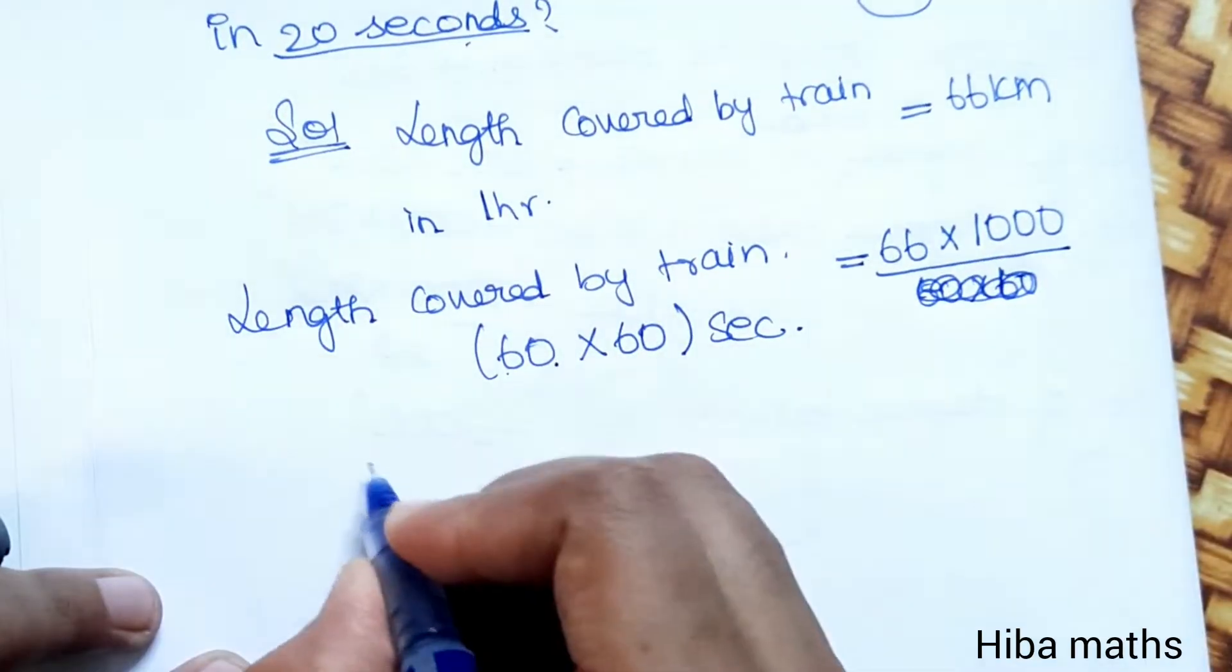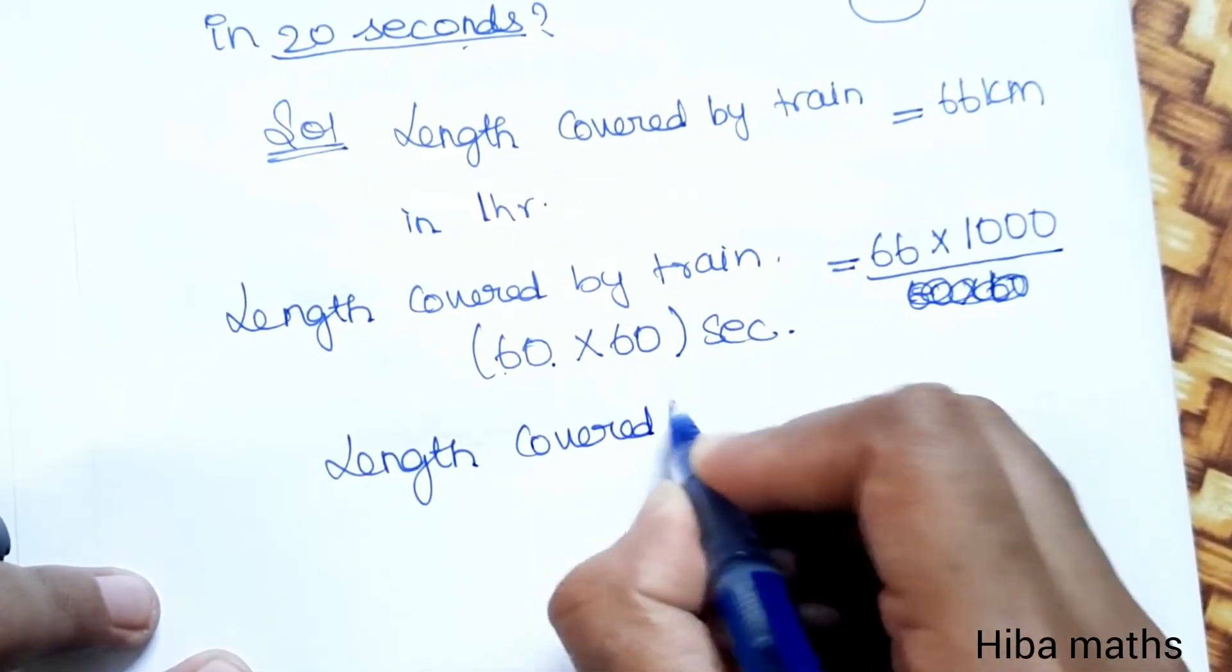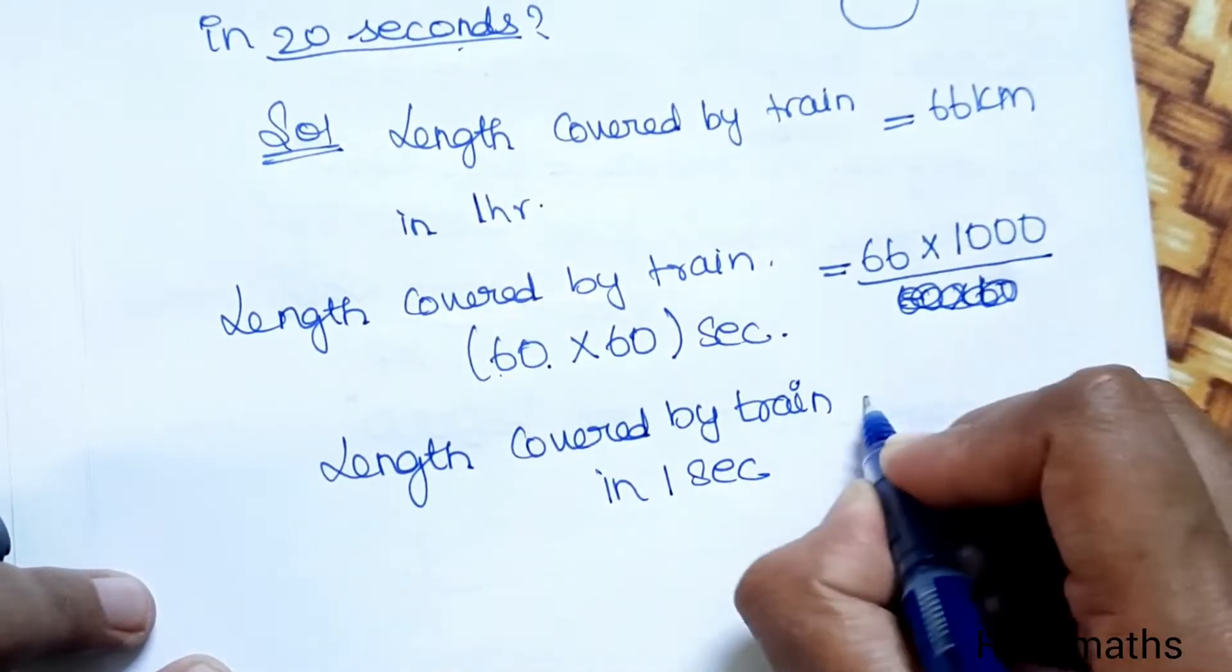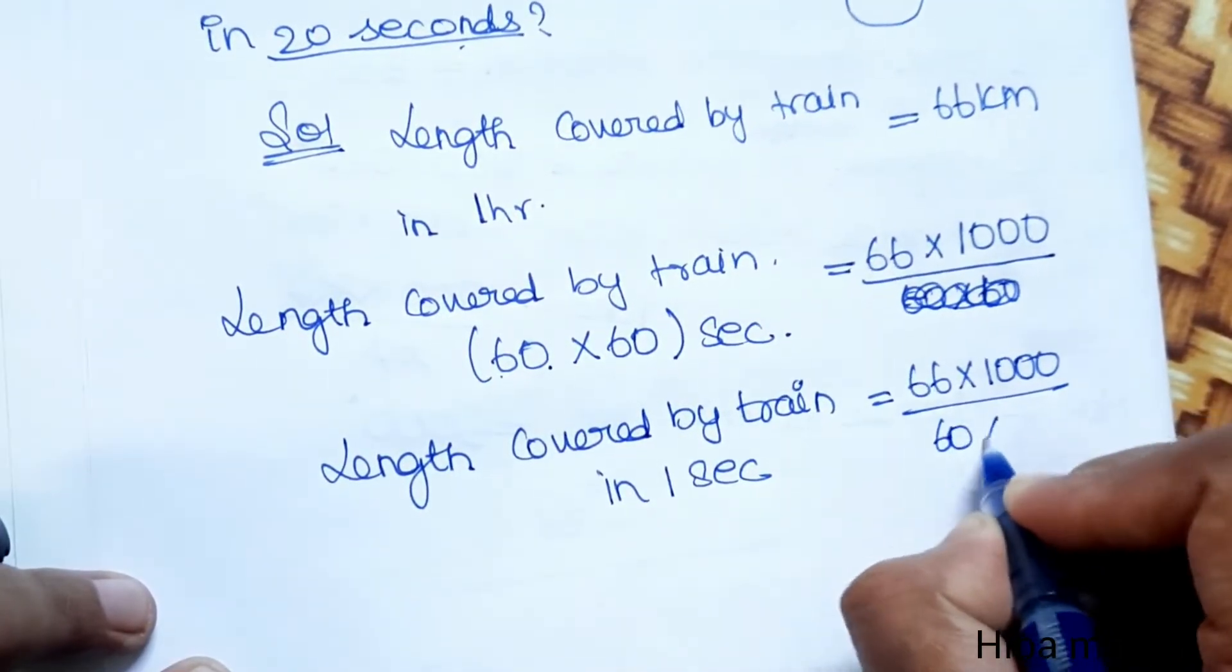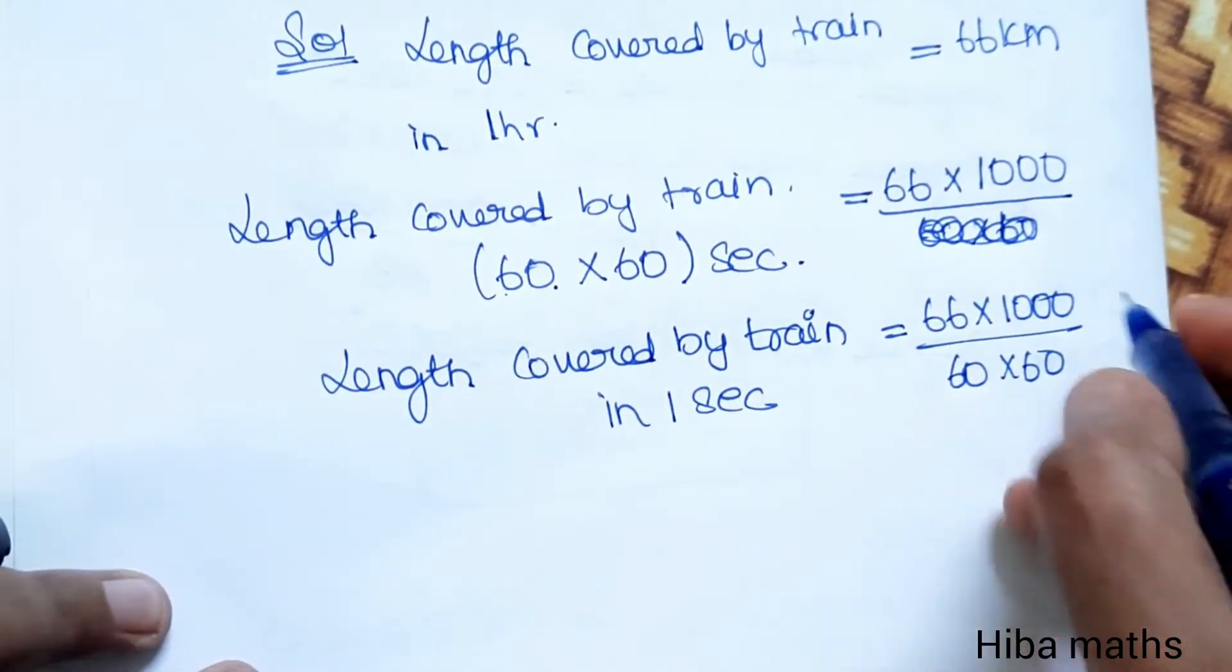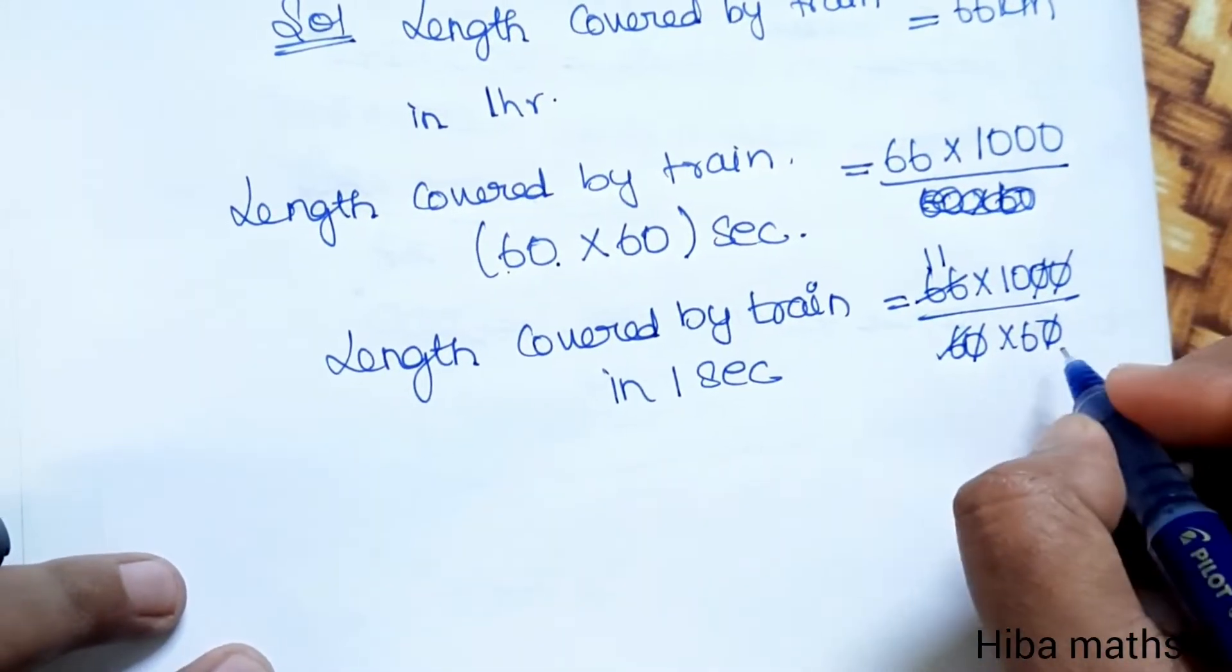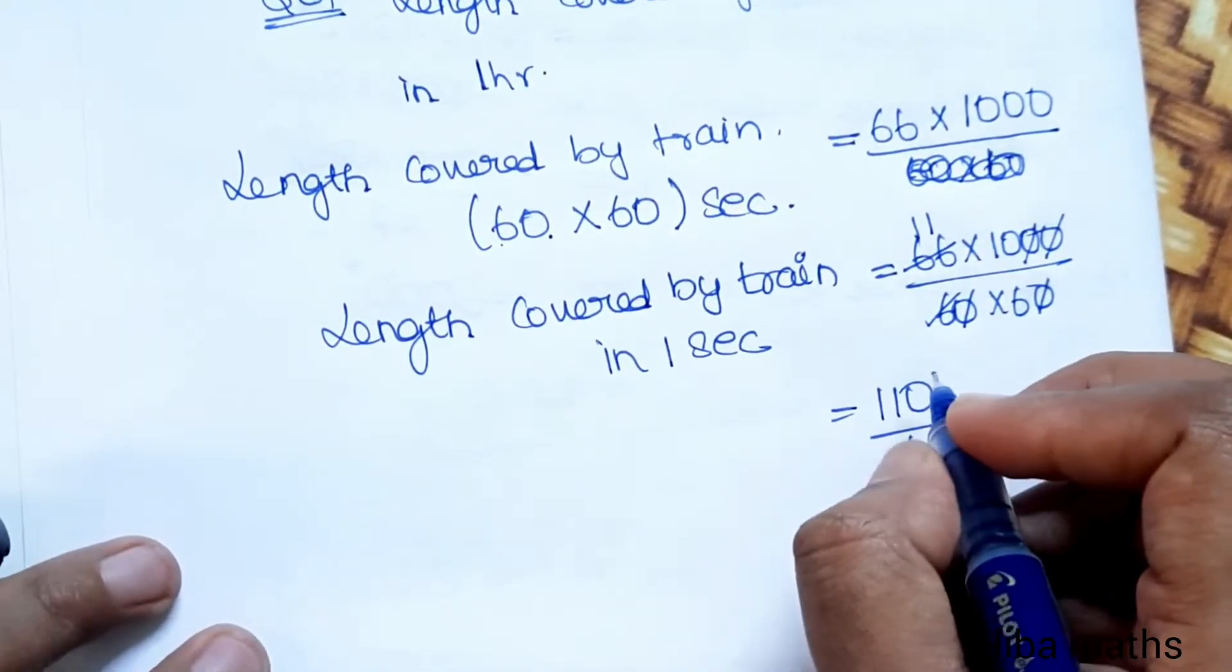We will find the length covered by train in 1 second. In 1 second, 66 into 1000 divided by 60 into 60. We can cancel zeros and simplify: 66 by 60. This gives us 110 by 6 meters per second.